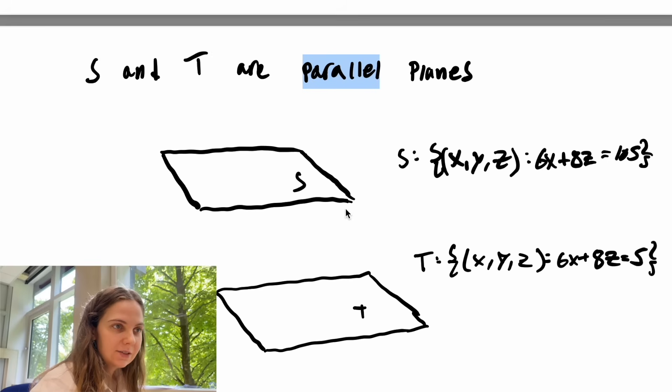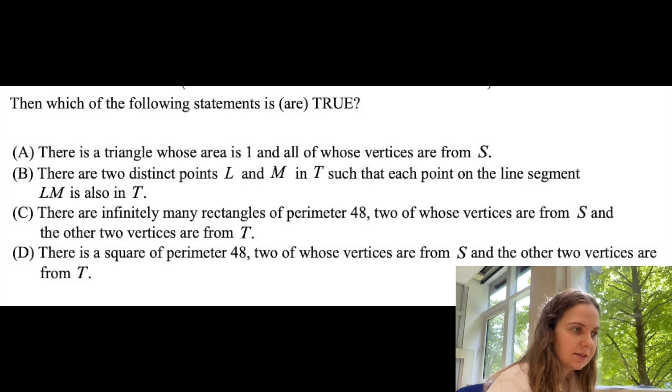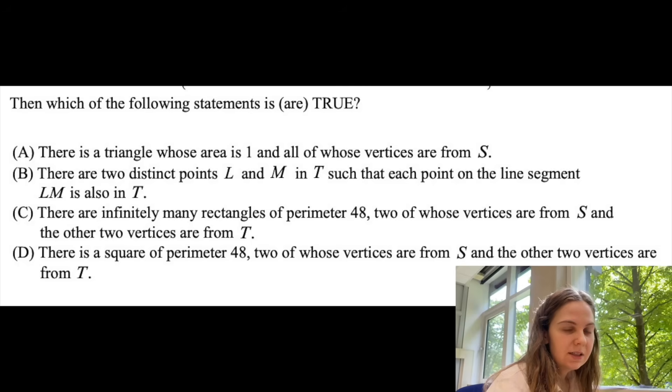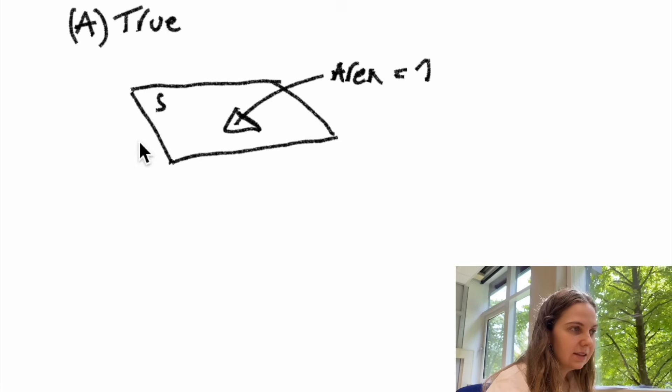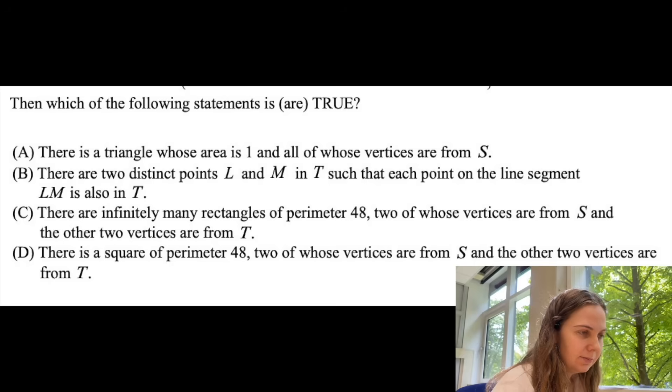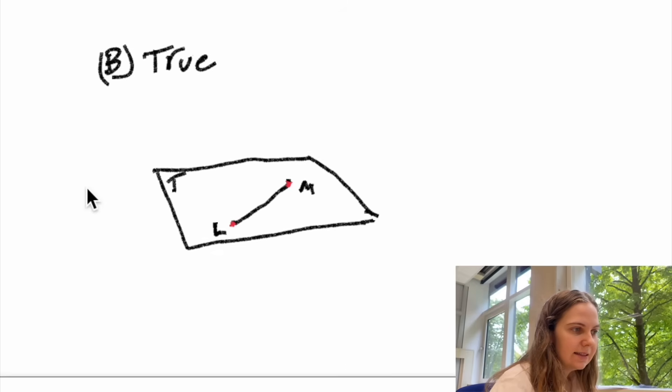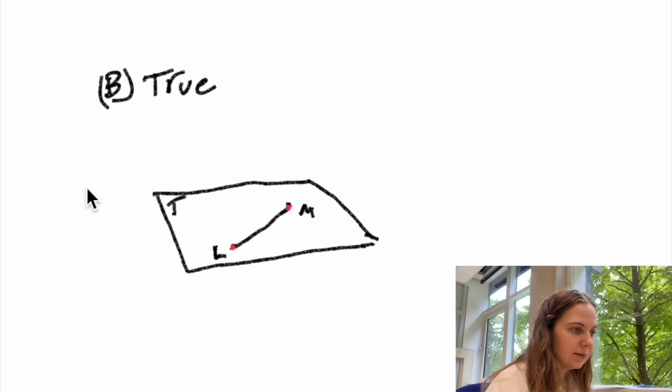And this makes our lives a lot easier because if we now go back to the statements we see that statement A: there is a triangle whose area is 1. We know that since S is just some two-dimensional surface we can easily just draw some random triangle which has an area of 1 and all of whose vertices are in S thus we know that A is true. Similarly for B: there are two distinct points l and m in T such that each point on the line segment l and m is also in T. Once again we know that T is just some 2D plane so we can easily take some point l, some point m and we draw a line between them and we know that this line segment lm is also going to be in T. So we know that B is also true.